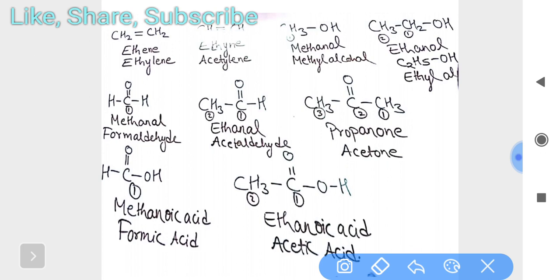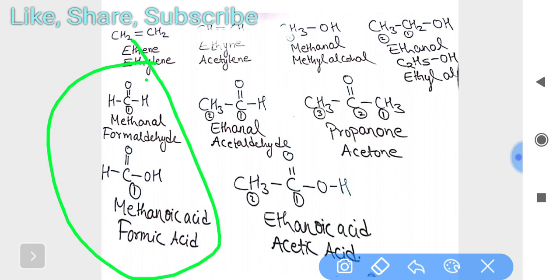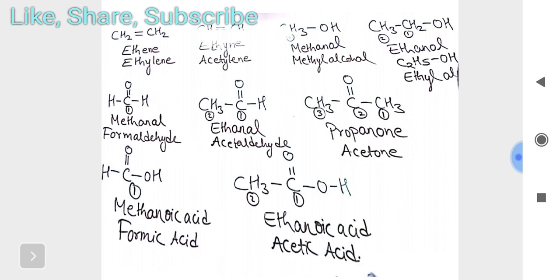I will tell you how to get IUPAC names later in a very easy method. For now, understand only the common names. Propanone's common name is acetone. Then HCOOH — methanоic acid — is called formic acid. The difference between formic acid and formaldehyde is that formaldehyde has a CHO group while formic acid has a COOH group. And CH₃COOH — ethanoic acid — is the very famous acetic acid, needed in many reactions.